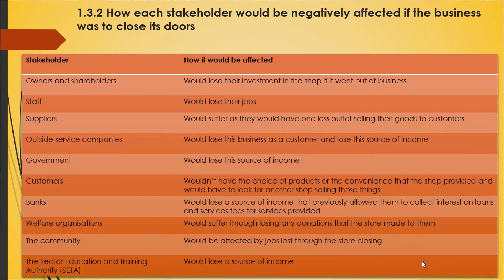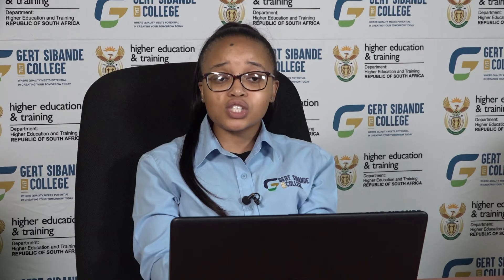Outside service companies would lose this business as a customer and their source of income. The government would lose tax revenue, as the main source of government revenue is tax — and more profit means more tax. If a business closes, the government loses that income source. Customers would lose the choice of products or the convenience that business provided, and would have to find another shop selling the same things.